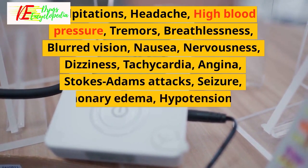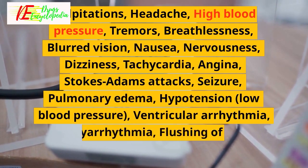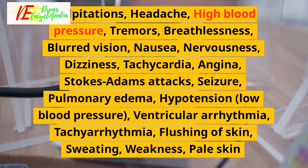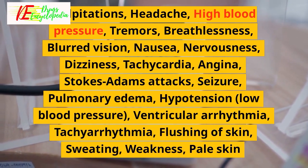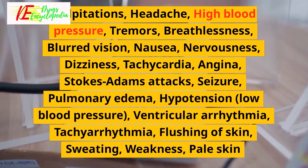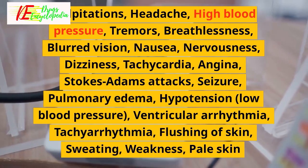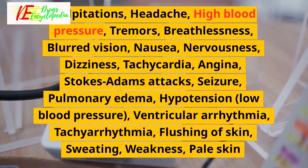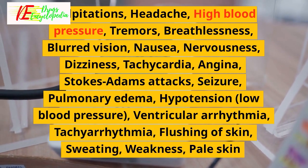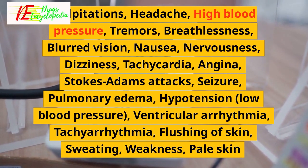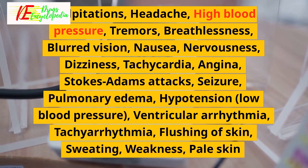Severe side effects of isoprenolin: palpitations, headache, high blood pressure, tremors, breathlessness, blurred vision, nausea, nervousness, dizziness, tachycardia, angina, Stokes-Adams attacks, seizure, pulmonary edema, hypotension (low blood pressure).